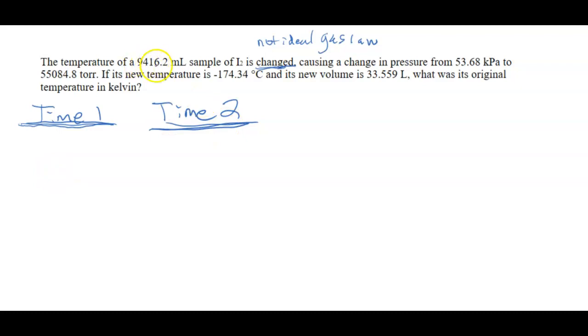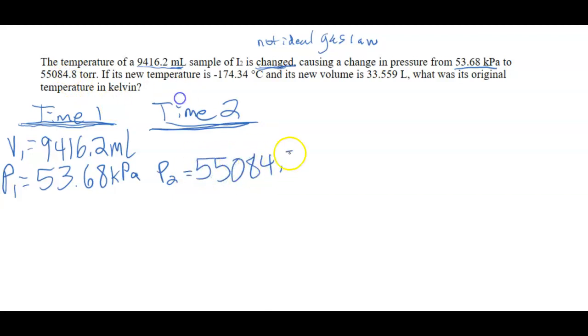So we have the temperature of a 9,416.2 milliliter sample of I2 is changed. So this is a starting volume. So milliliters tells us that's a volume. So we know our initial volume. So I'm going to label the volume at time one as 9,416.2 milliliters, causing a change in pressure from, so that's the starting pressure, so P1. So pressure is kilopascals here, 53.68 kPa to, so that means I'm going to a new pressure, that's my P2, 55,084.8 torr.